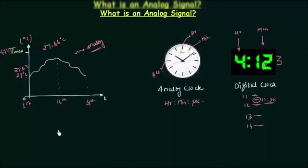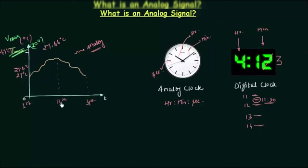An analog signal is a signal which can take any value within the given limit. Now, since we are talking about digital electronics, let's replace T max with V max. V max is the voltage — this is zero volts and V max is the maximum voltage. If V max is 20 volts, the signal can take any value between 0 and 20 volts, because it is an analog signal.